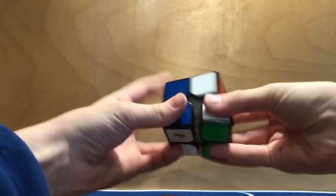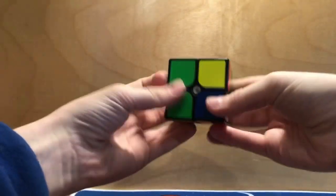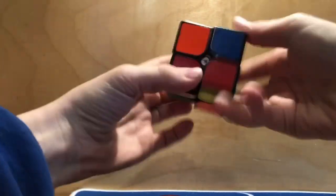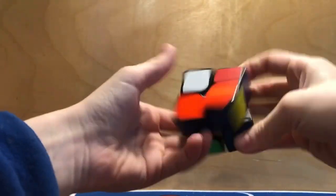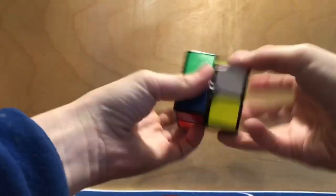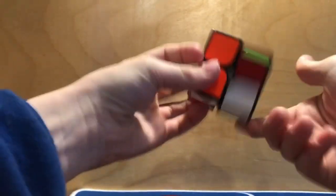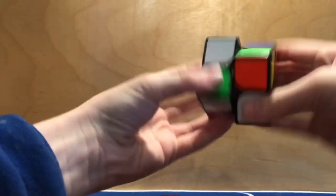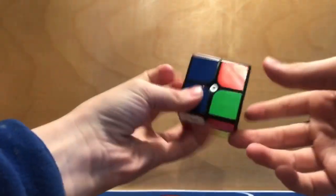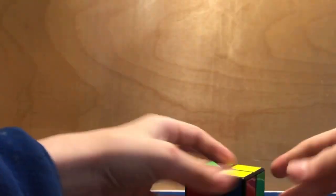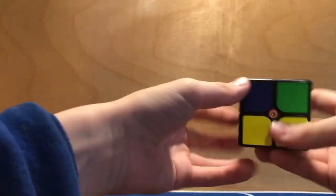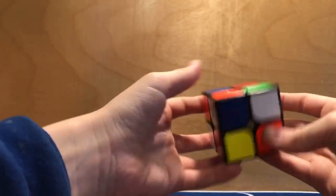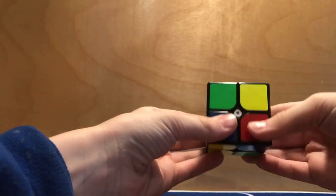So the first step is to scramble up the cube. And I'll just be using different methods of 2x2 or Ortega, CLL, all those ones. So yeah. Okay. Okay. And here we go.